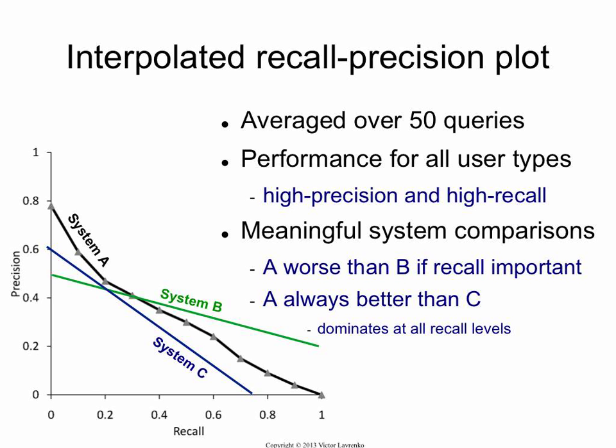So one system is better for precision-oriented users — like web users — and another is better for medical professionals or lawyers. Now, if you have a curve for system C that is dominated everywhere by system A, you get a clear result: system A is better than system C at any level of recall. Regardless of whether you are a high-precision or high-recall user, algorithm A is preferable to algorithm C. That's how you show your system is genuinely better.